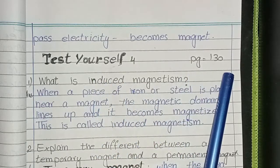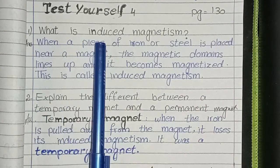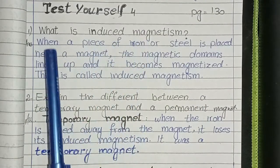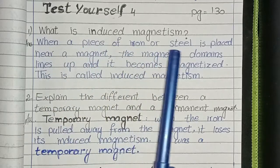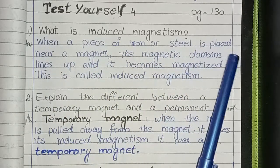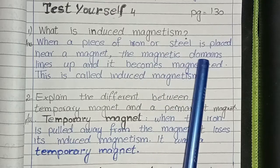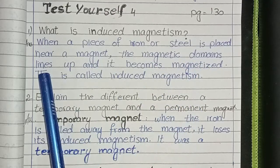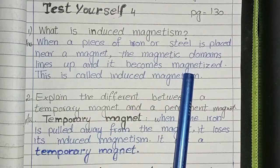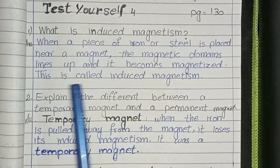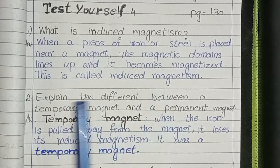Fourth Test Yourself. What is induced magnetism? When a piece of iron or steel is placed near a magnet, the magnetic domains line up and it becomes magnetized. This is called induced magnetism.